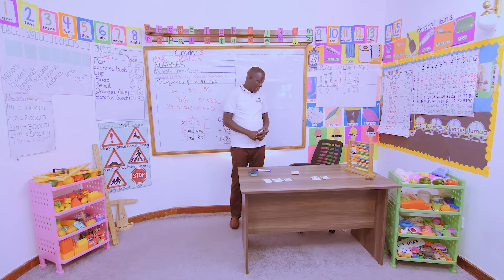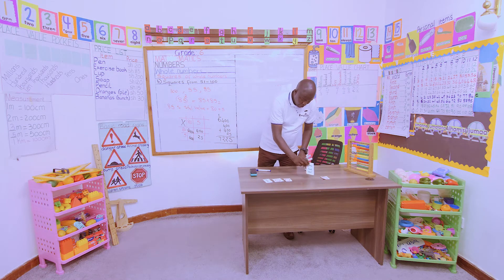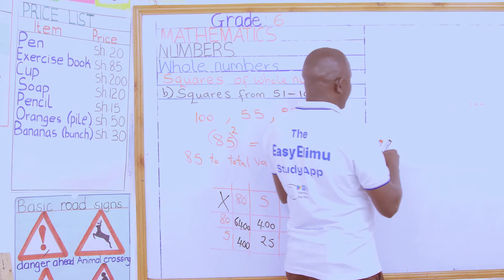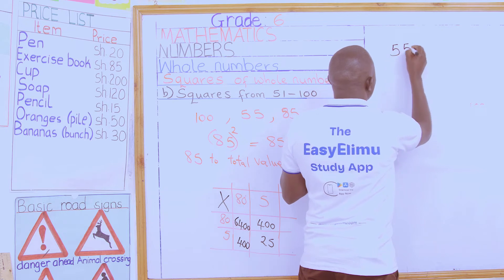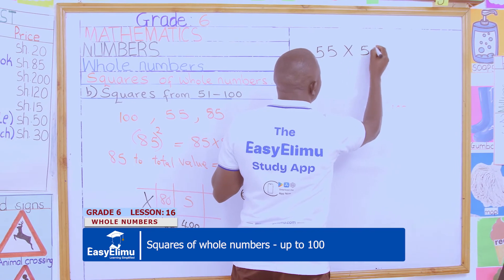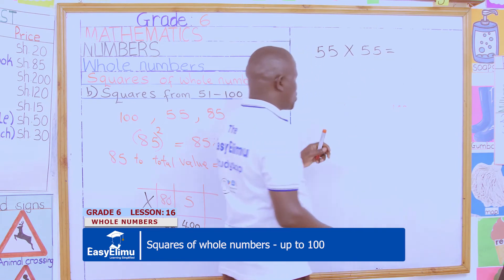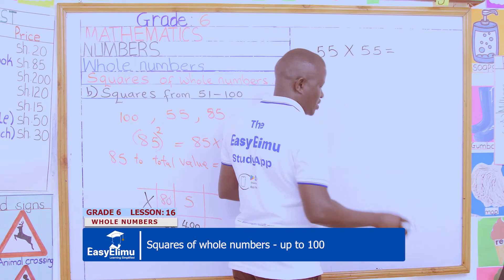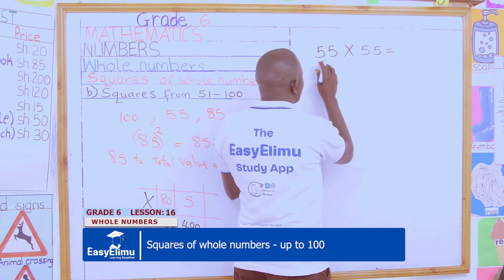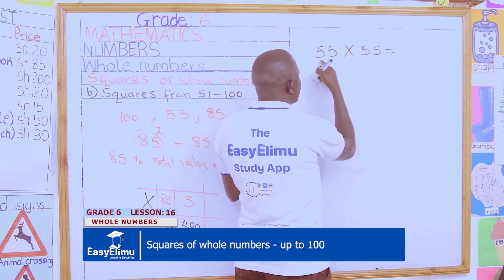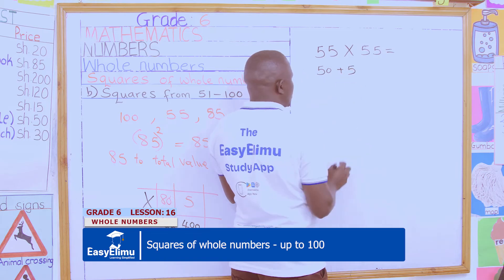Before we finish, let's try working out another example. We'll take 55. What is the square of 55? That is 55 multiplied by itself. Let us try expanding it the same way: when you break 55 to its total value, you get 50 plus 5 — that is 5 tens and 5 ones.